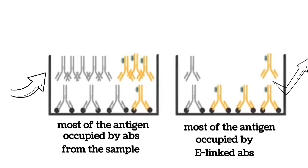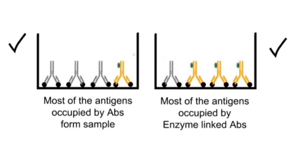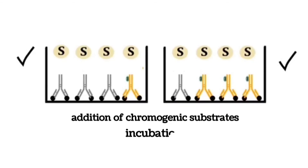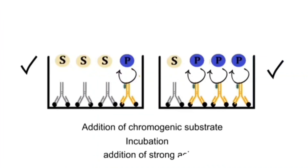After this, the well is washed to remove unbound antibodies. This step is followed by the addition of chromogenic substrate and incubation for a fixed period of time. After incubation, the reaction is stopped by adding a strong acid. During incubation, the enzyme coupled to the enzyme-linked antibody converts the substrate into a colorful product.